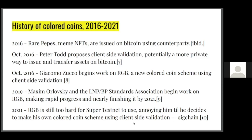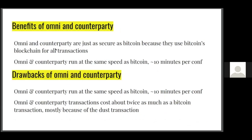The presenter got frustrated trying to compile and run RGB from GitHub, so he built his own implementation using the same client-side validation protocol Peter Todd proposed in 2016, calling it Sigchain. Since RGB is now releasing soon, Sigchain is somewhat a moot point — but it will be demonstrated later.